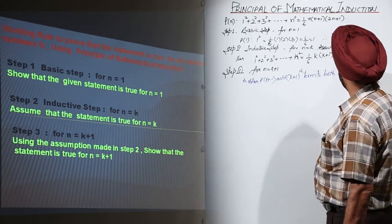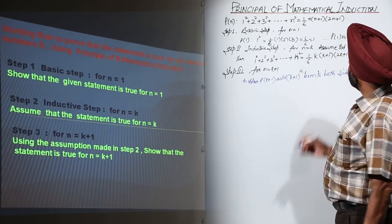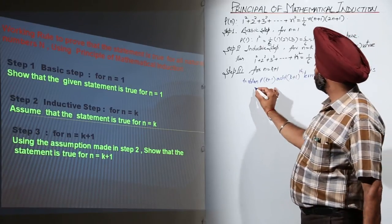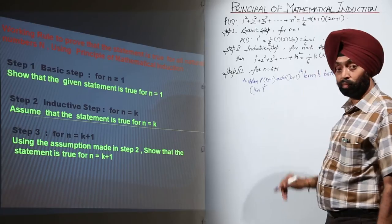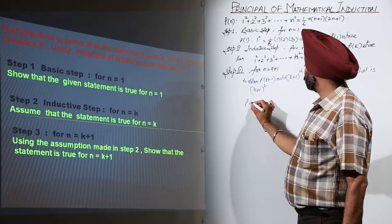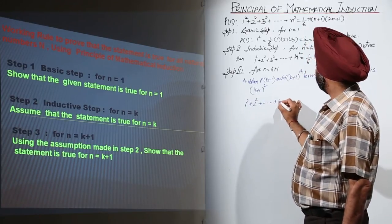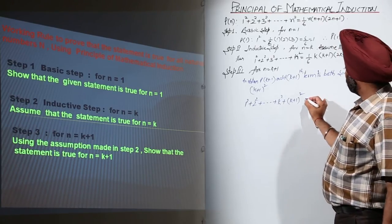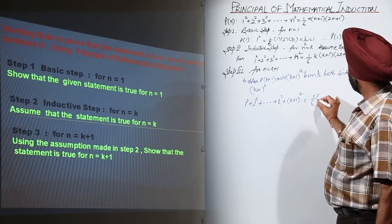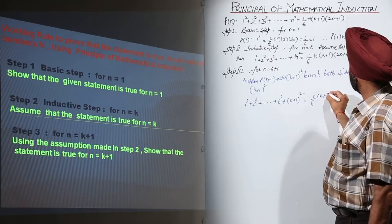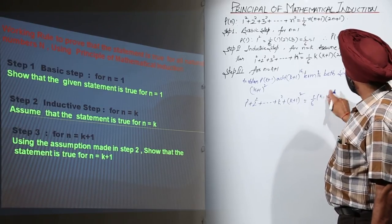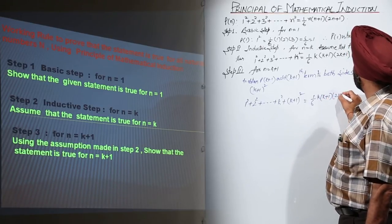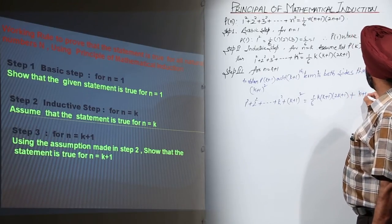The (k+1)th term means: here it is n squared, so the next term — putting n equal to k+1 — is (k+1) whole squared. So the LHS becomes 1 squared plus 2 squared plus ... plus k squared plus (k+1) whole squared, equal to (1/6) times k times (k+1) times (2k+1) plus (k+1) whole squared.